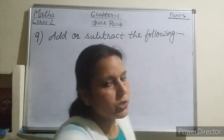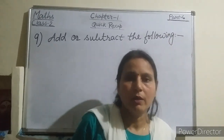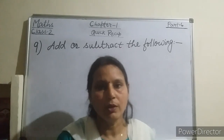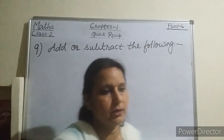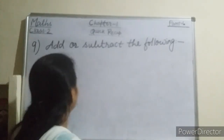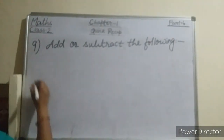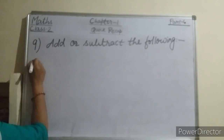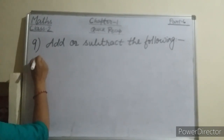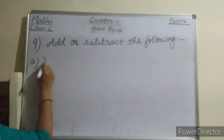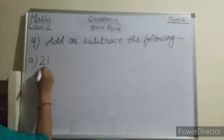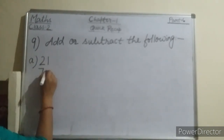First of all, we will do 2-digit simple addition. Start doing — this is our first question: 21 plus 73.